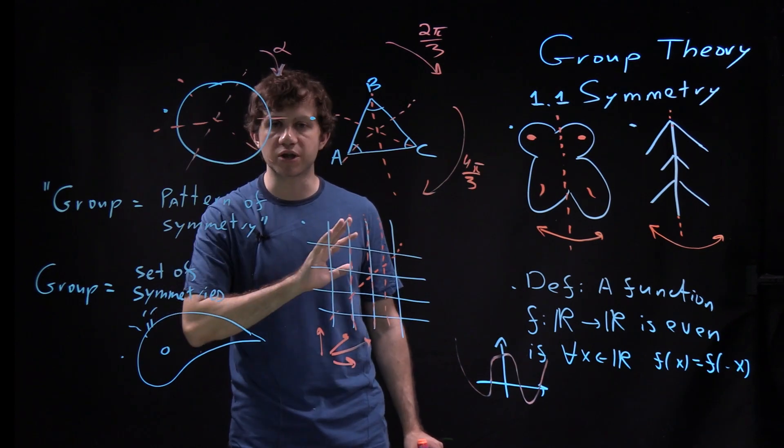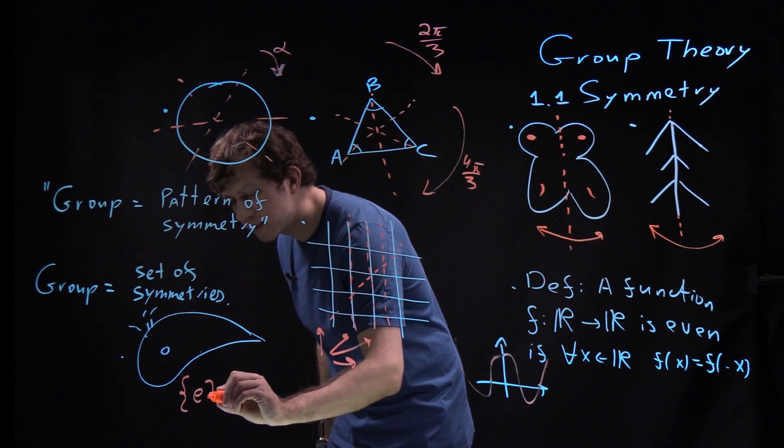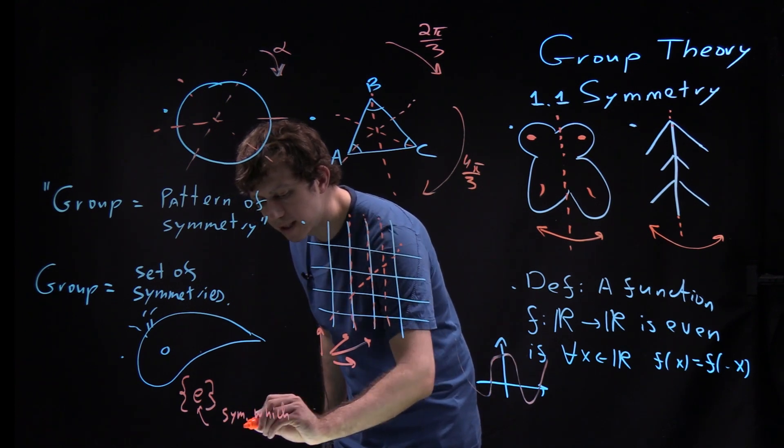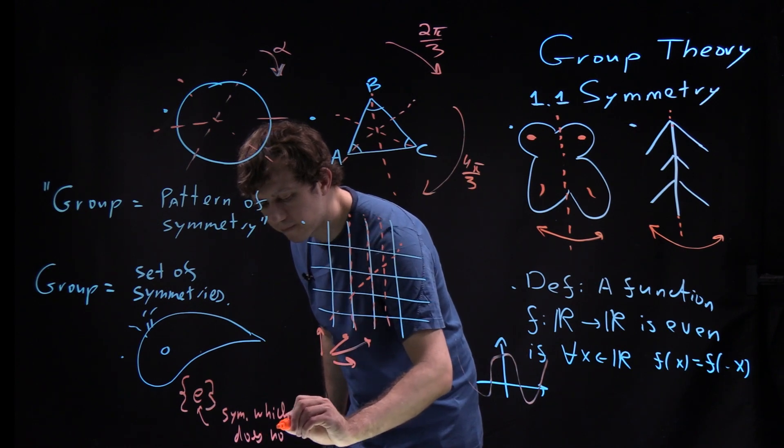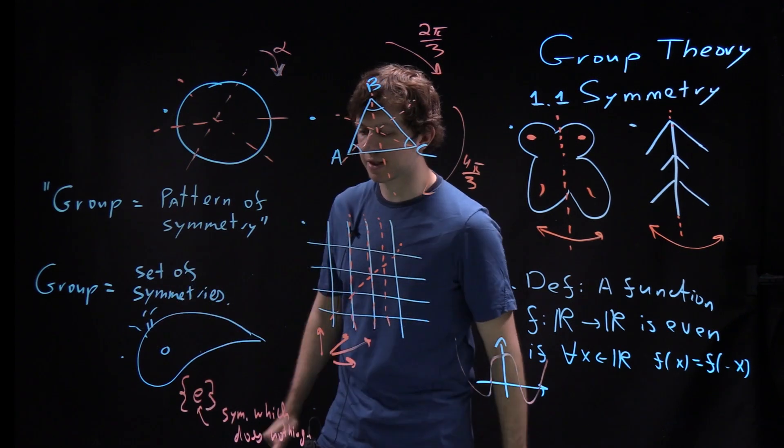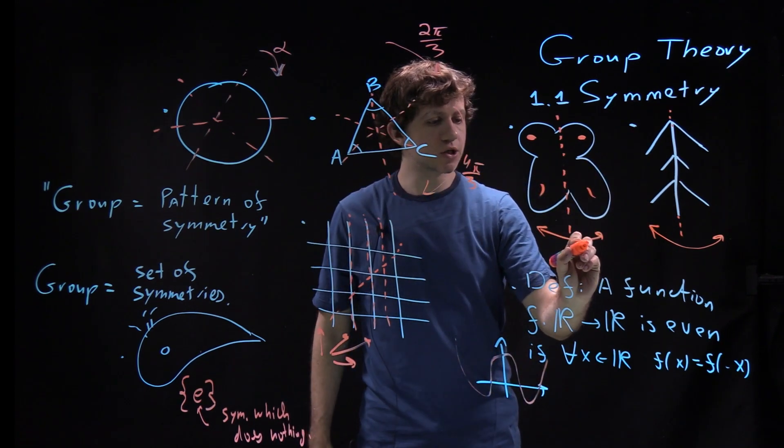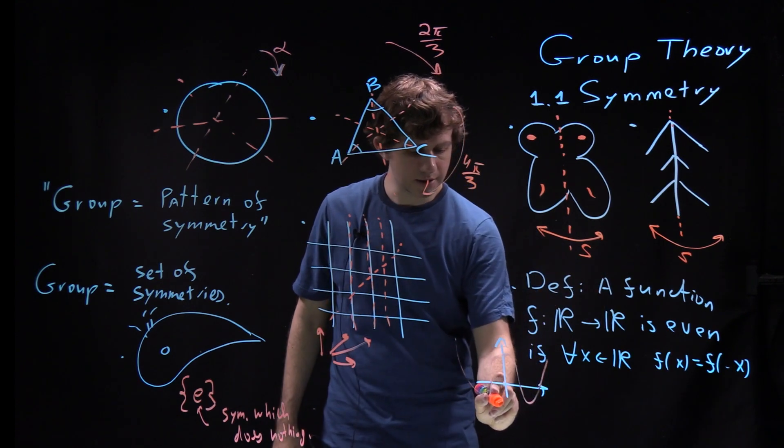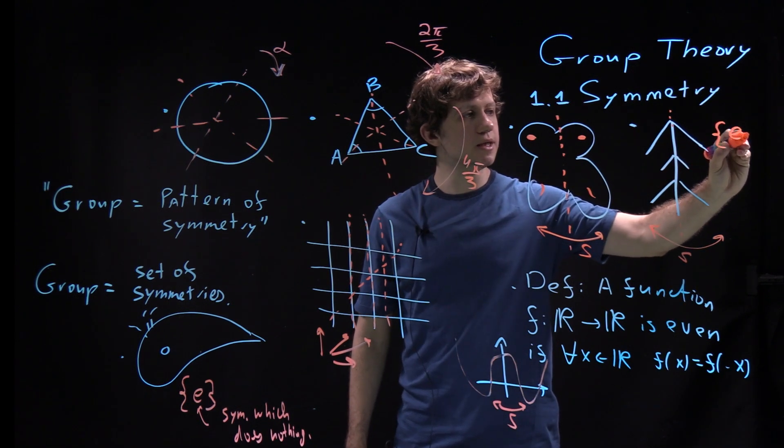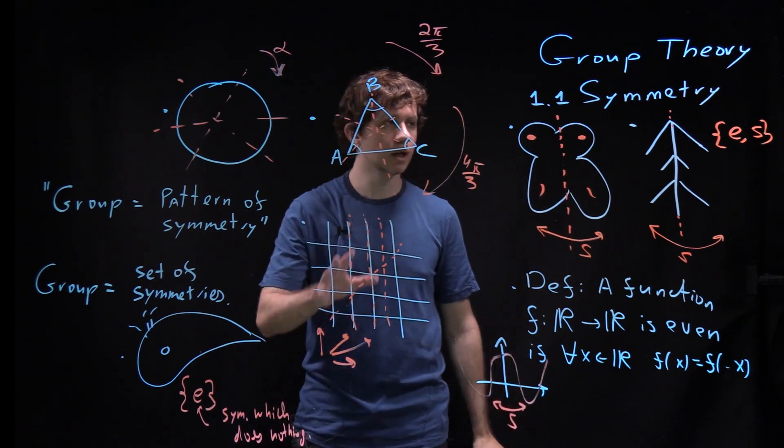Namely, a transformation which does nothing to it. So here this group of symmetries will have just one element and this will be called E. Just stay at rest. This whale is just staying as it is. Nothing happens. But if you look at these examples, all three actually, there is this additional symmetry S. And this is again S. And here the symmetry is a set with two elements E and S. And again E does nothing. S flips your butterfly.